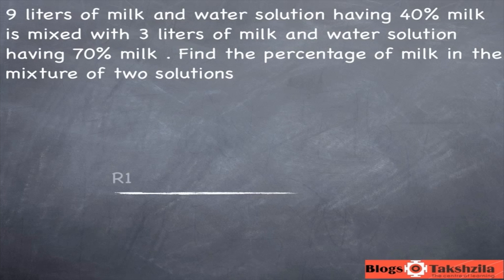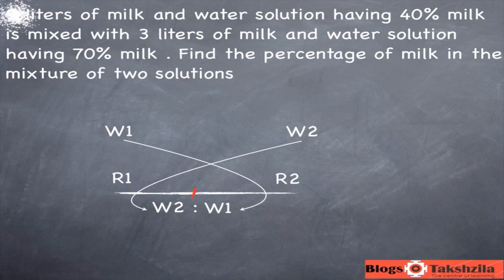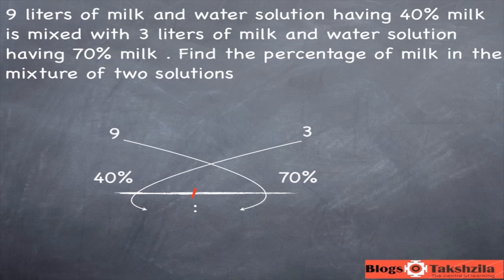In this first problem, we draw the scale and start putting the data down. It says 40% milk and 70% milk — these are the rates, so bring them down on the rates. The 9 liters and 3 liters are the quantities for each solution. 40% milk means milk by total, so total is the weight — bring 9 down and 3 down in the weight part.